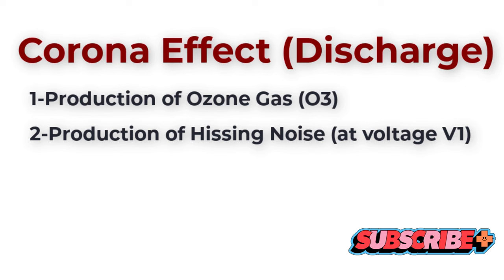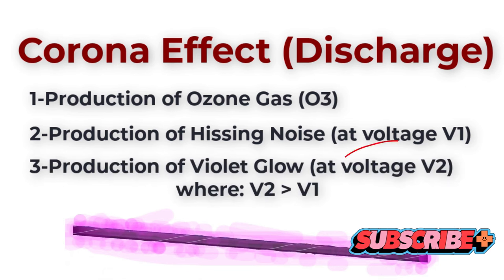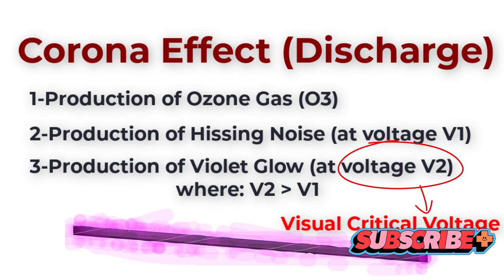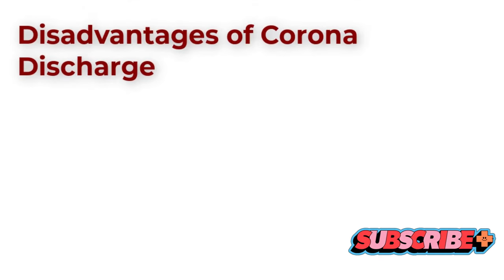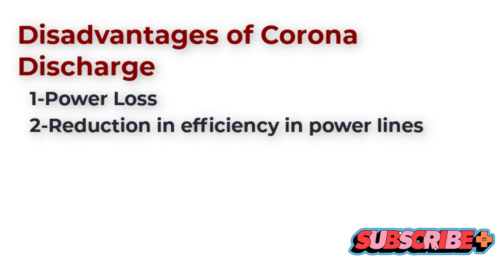The effects of corona are multifaceted. On one hand, it can lead to power loss, radio interference, and damage to the conductors. On the other, it can be used beneficially in applications like ozone production, air purification, and even in some types of lighting. Understanding this phenomenon is crucial for electrical engineers — it helps them design and maintain electrical systems to avoid the negative effects of corona while potentially harnessing its positive aspects. This knowledge is also key in ensuring the safety and efficiency of our electrical systems.